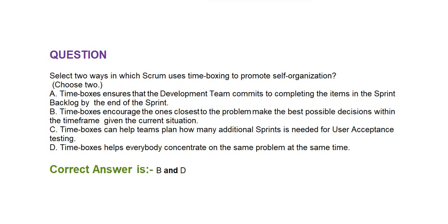Next question: select two ways in which Scrum uses time boxing to promote self-organization. Choose two options. Option A: time boxes ensure that the development team commits to completing the items in the sprint backlog by the end of the sprint. Option B: time boxes encourage the ones closest to the problem to make the best possible decisions within the time frame given the current situation. Option C: time boxes can help teams plan how many additional sprints are needed for user acceptance testing. Option D: time boxes help everybody concentrate on the same problem at the same time.